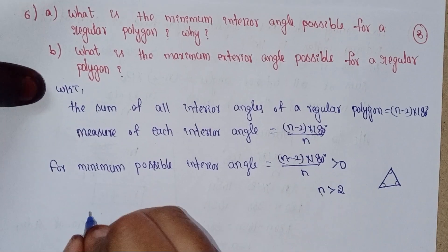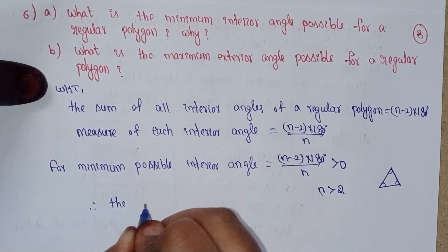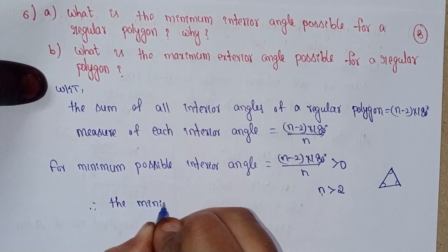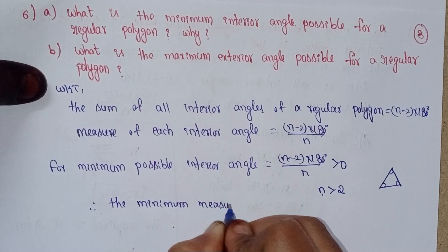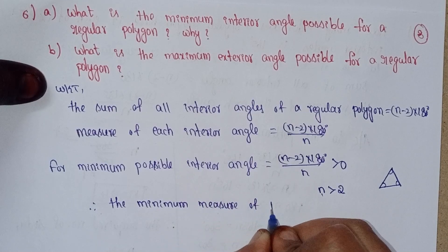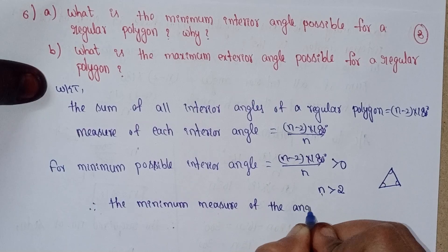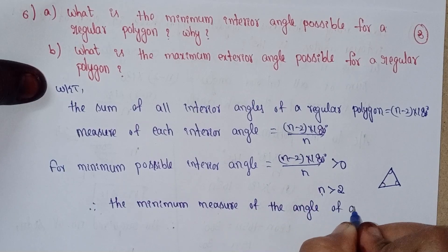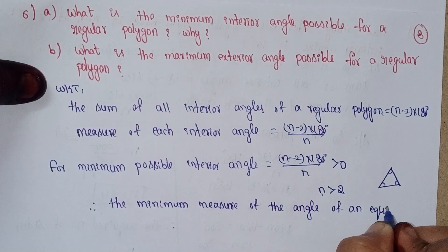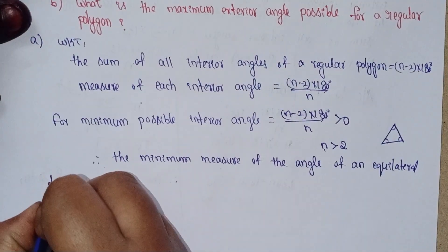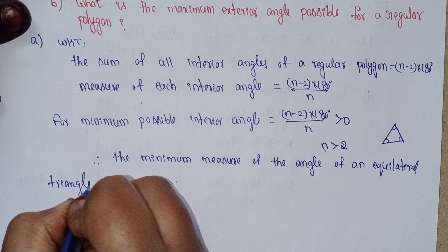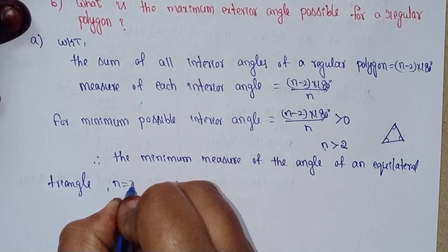Therefore, the minimum measure of the angle of an equilateral triangle, where n equals 3, is 60 degrees.